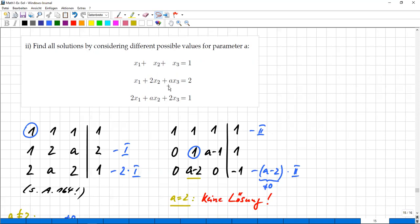And this, of course, as you may know, makes it necessary to perform a case distinction. So we have to distinguish different cases depending on which value this built-in parameter A has.